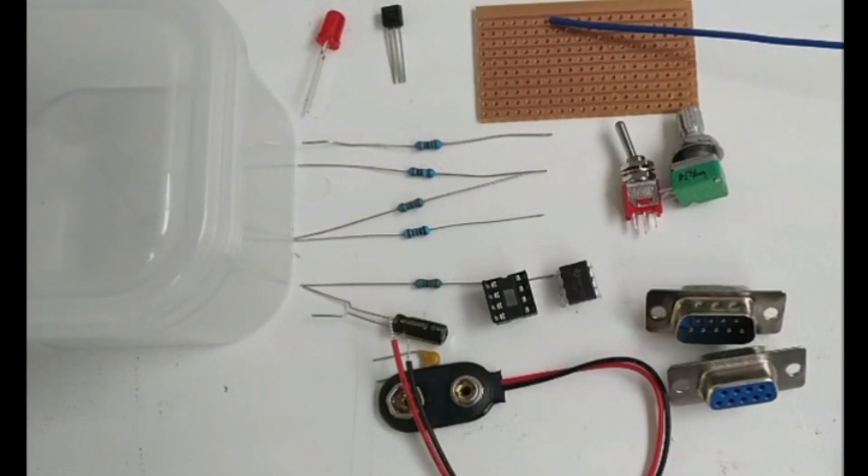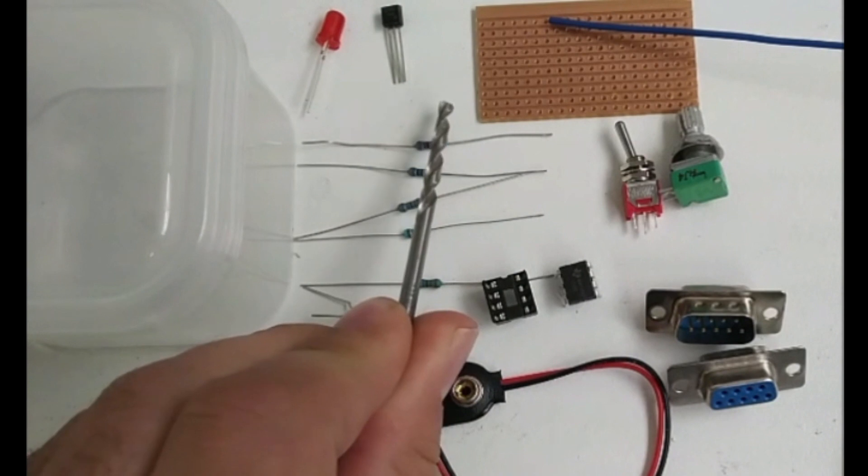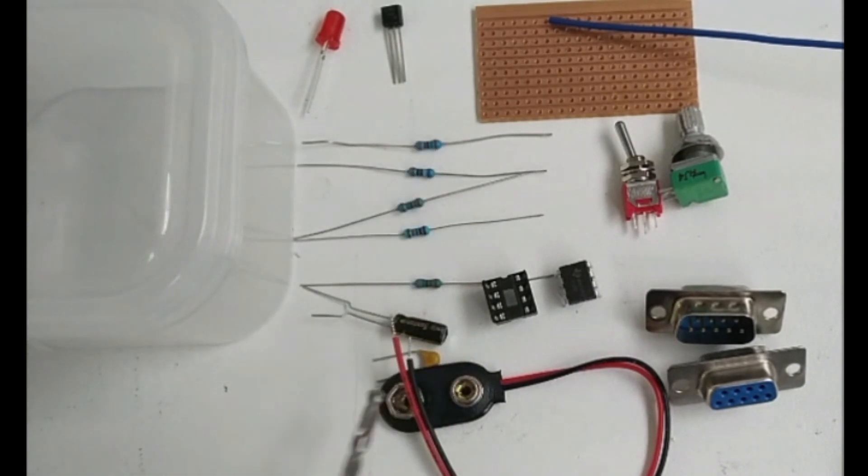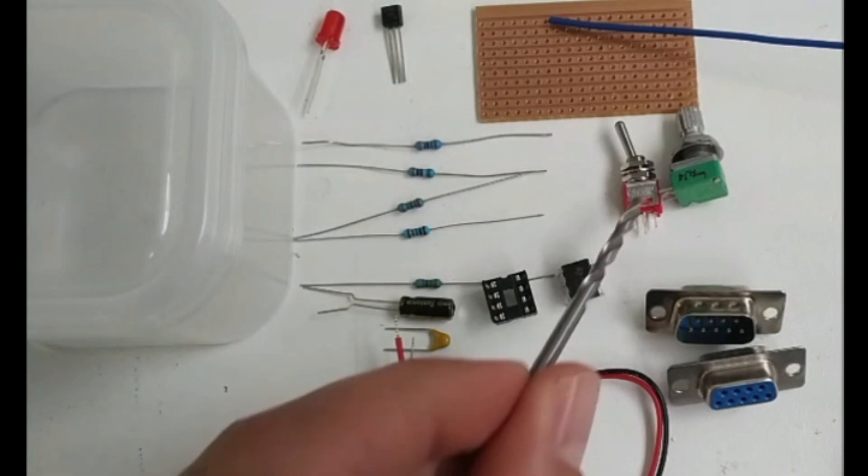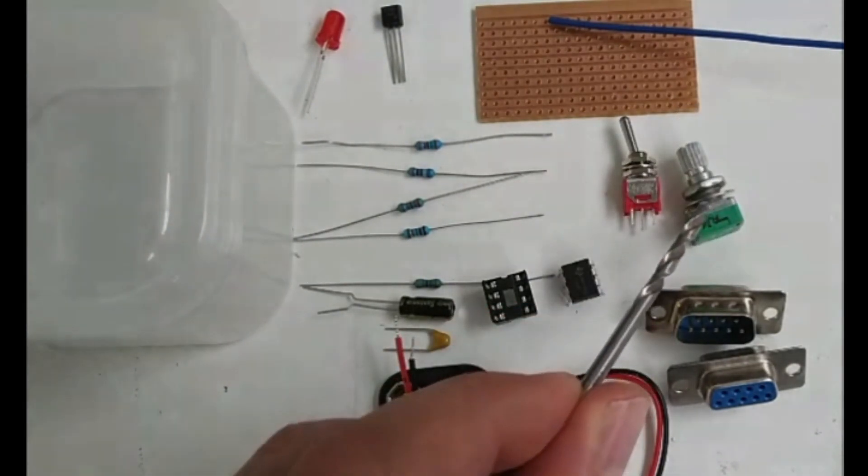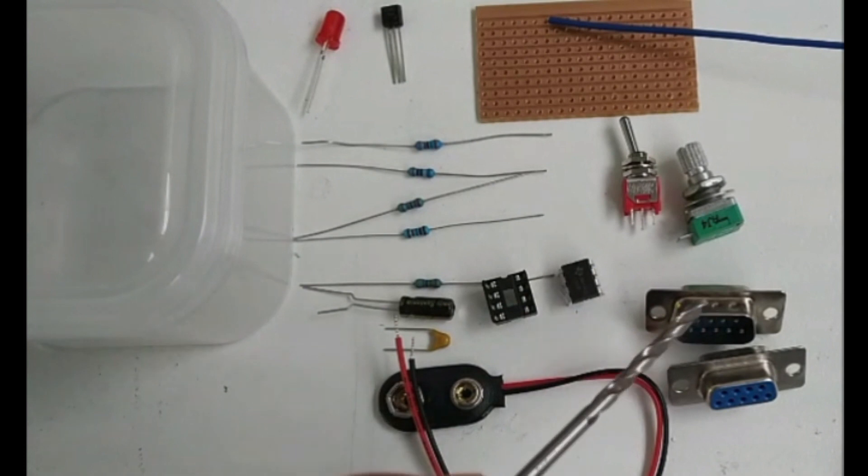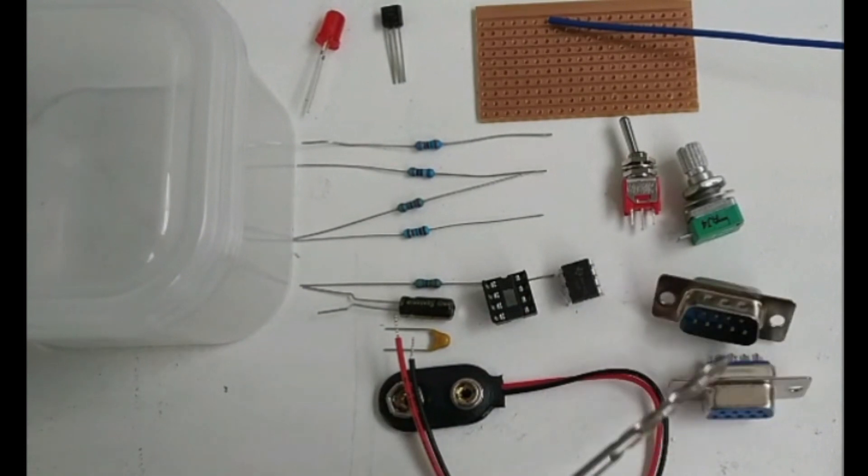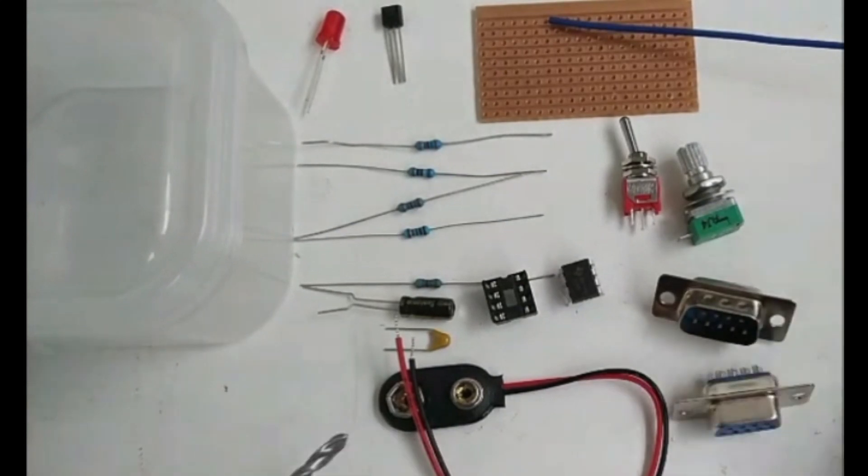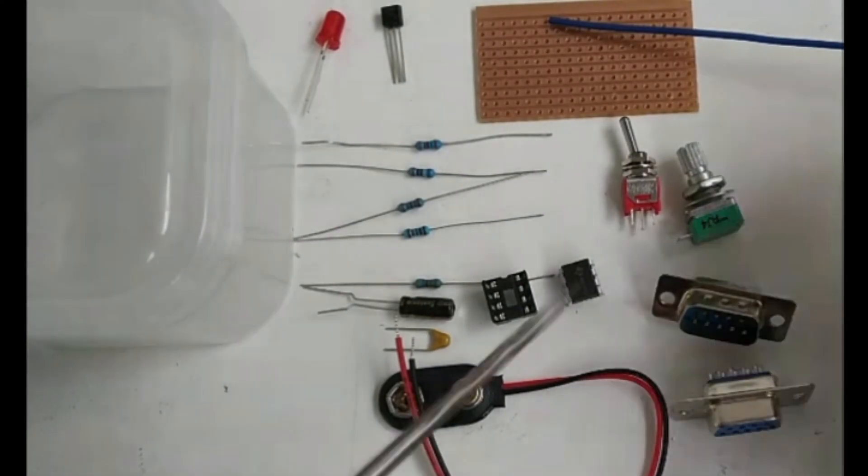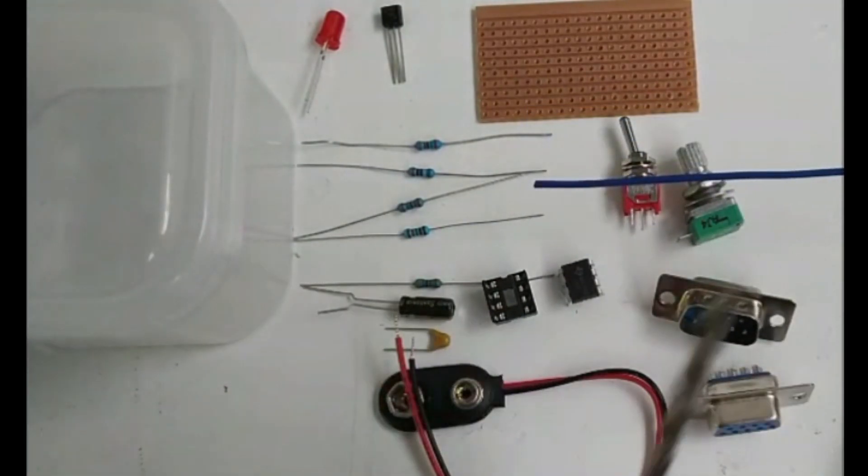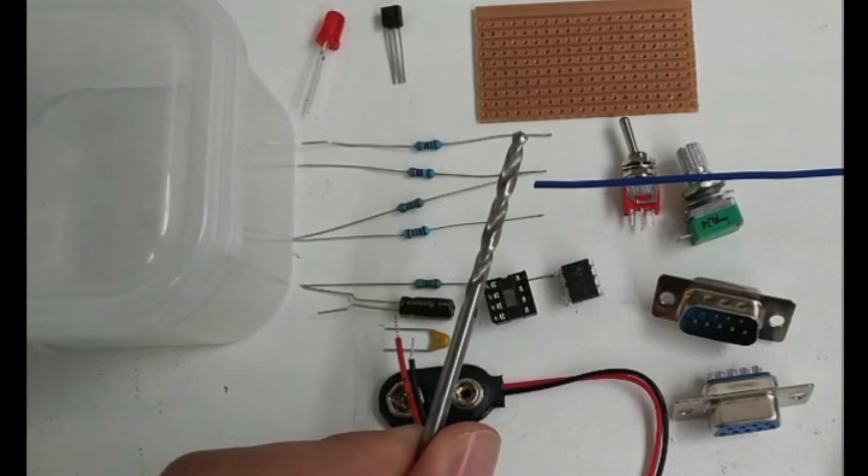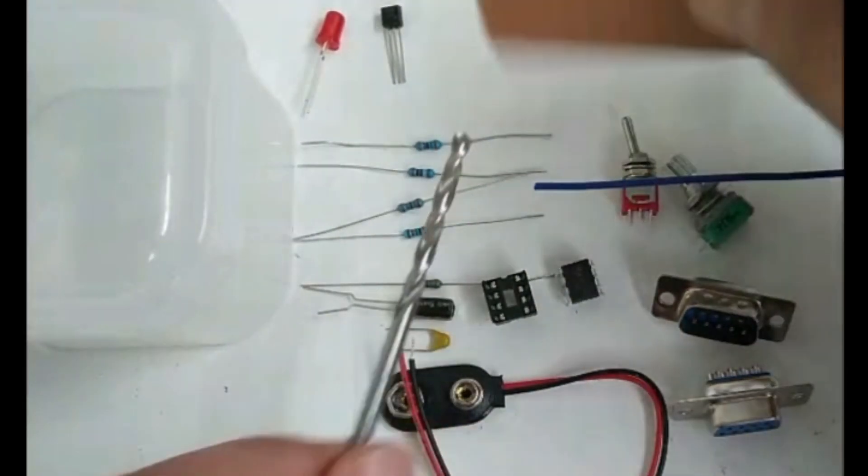Okay, so here are all my components. I've got the LED, my transistor, the 5 resistors, the electrolytic capacitor, the ceramic capacitor, my 555 timer chip, my on and off switch, my variable resistor here - my trim pot - and I've got my male and female D9 connector for the joystick. I've also got the battery connector, some wire here, a box to put it in, and I've got this drill bit. And what the drill bit is for is for cutting the tracks on the stripboard.